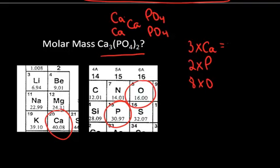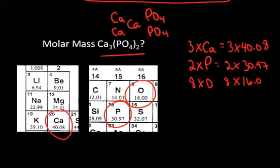So, I just say three times 40.08 grams per mole there, and this is going to be two times 30.97 grams per mole there, and for the oxygen, it's going to be eight times 16. If I add up all those numbers on my calculator, I get that the molar mass for this particular compound is 310.18 grams per mole.